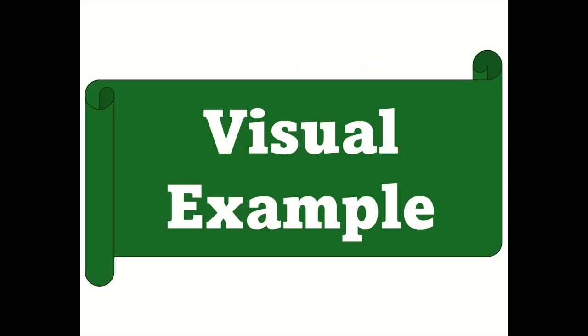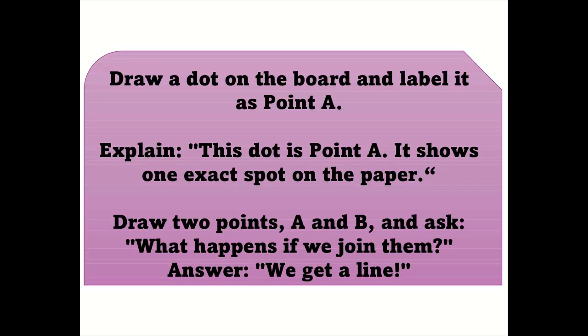Visual example: Draw a dot on the board and label it as Point A. Explain: This dot is Point A. It shows one exact spot on the paper. Draw two points, A and B, and ask: What happens if we join them? Answer: We get a line.